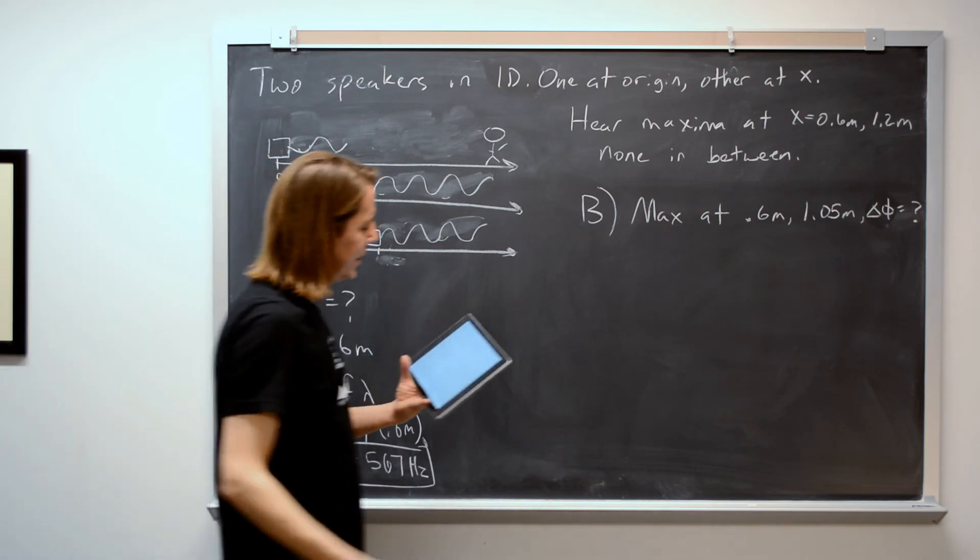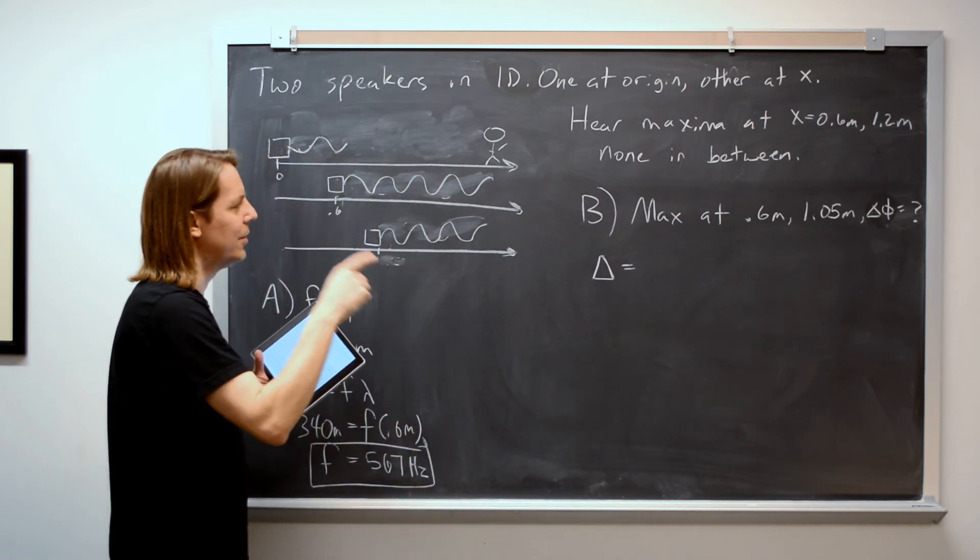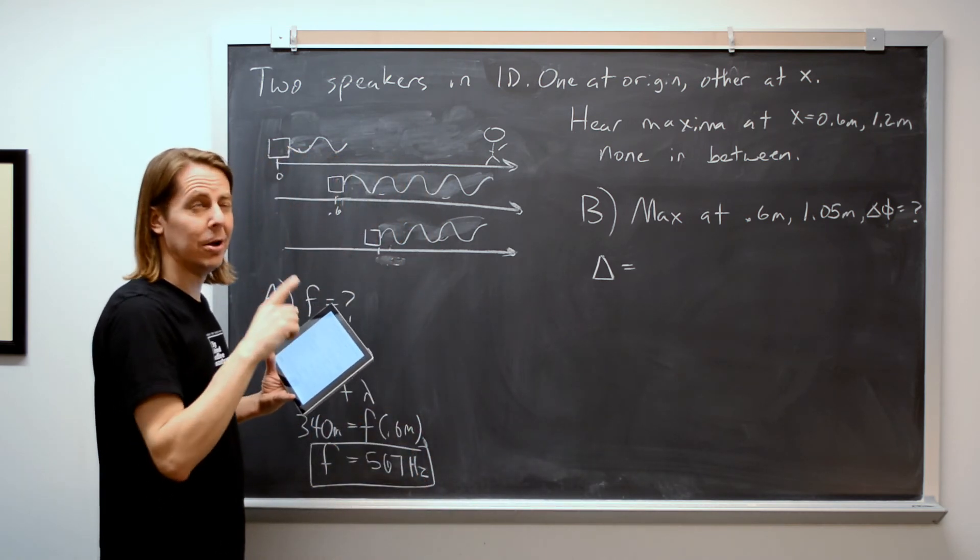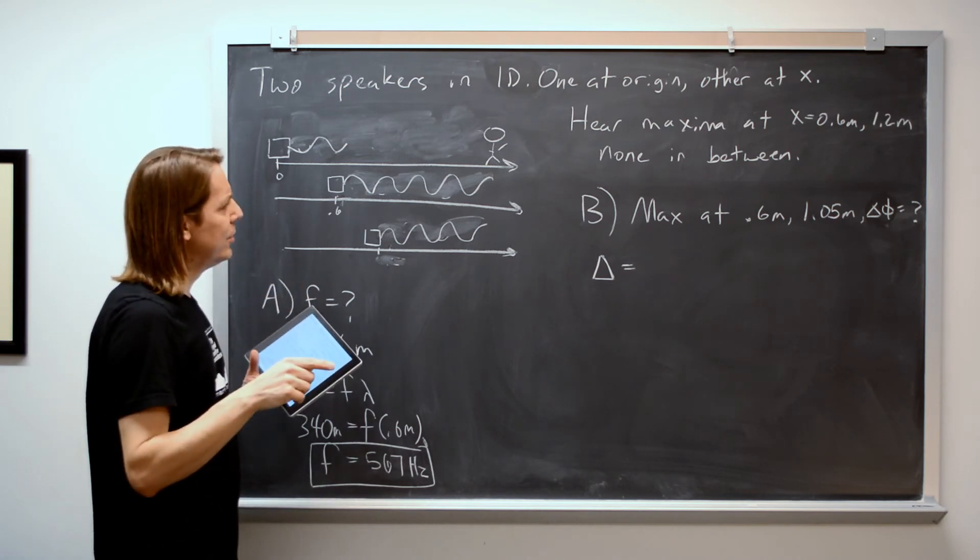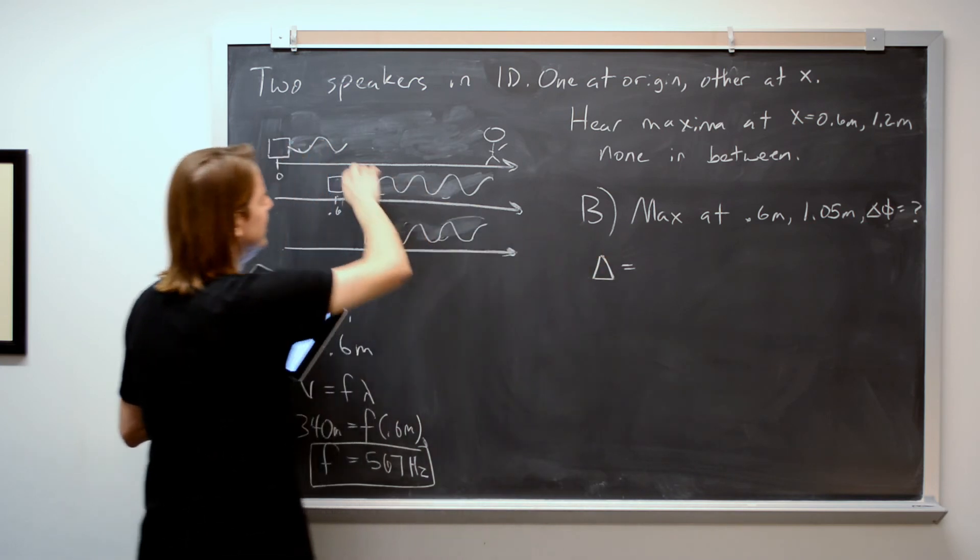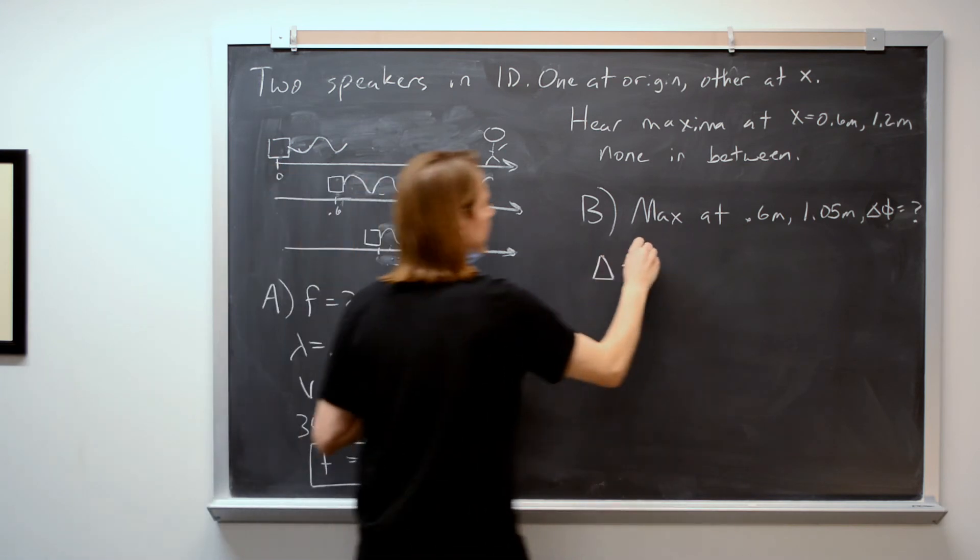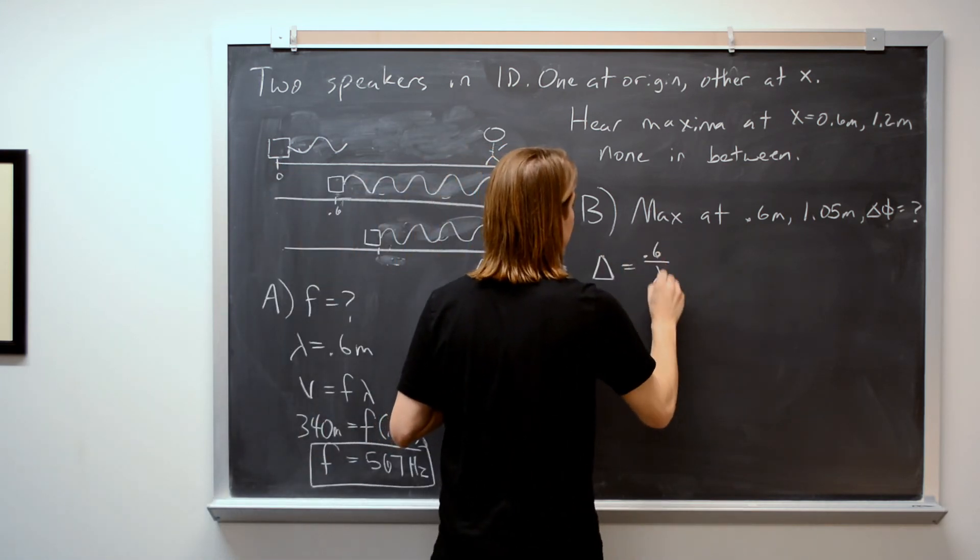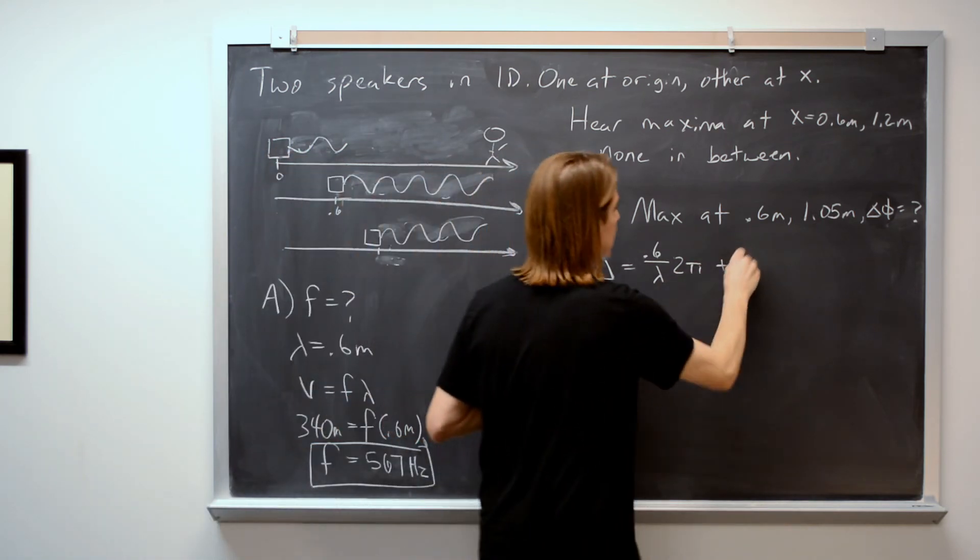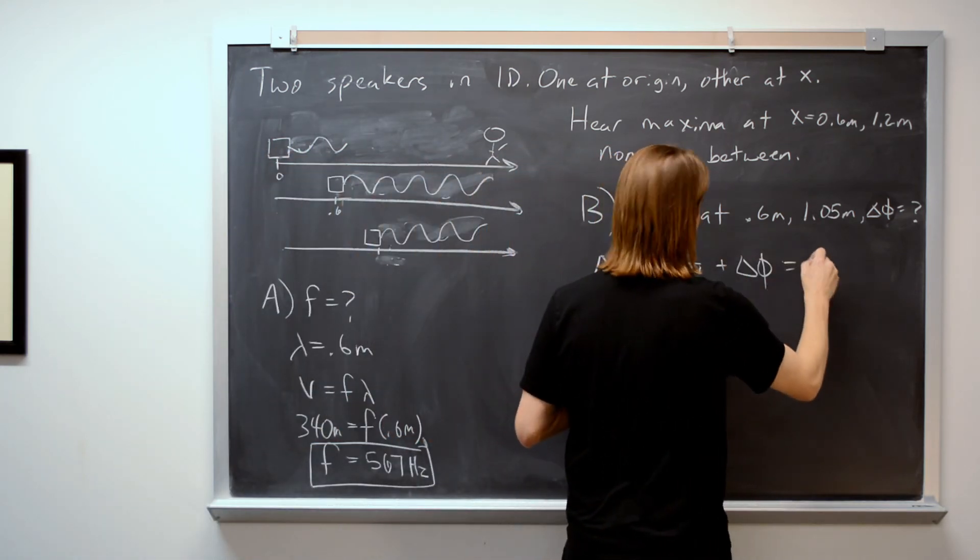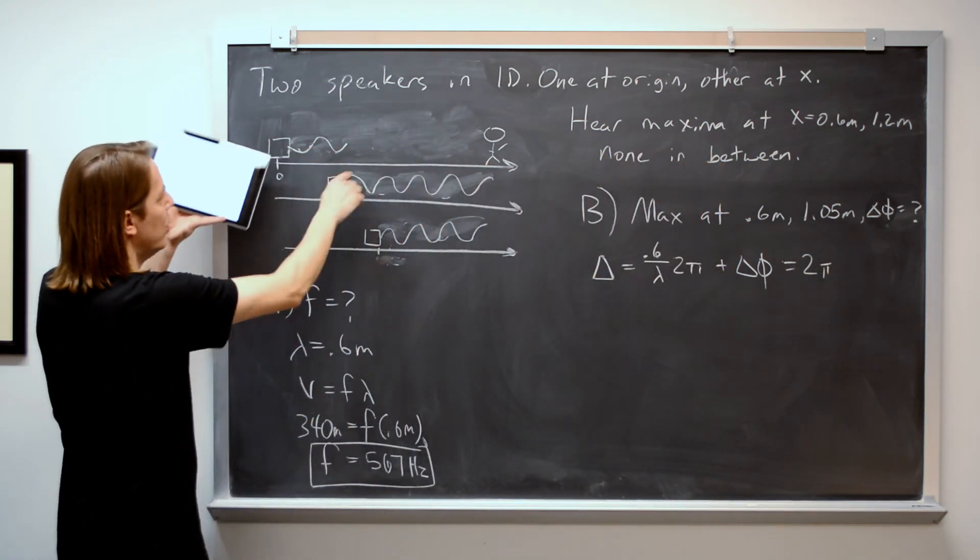So let's write it down. So let's look at our constructive interference. We know that it's Δx over λ times 2π plus the difference in phase equals 2πm. So let's see. So if we're talking about the difference of the two paths here, first it's going to be a 0.6 meter difference. So 0.6 over λ times 2π plus the difference in phase that we're looking for equals 2π.